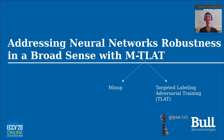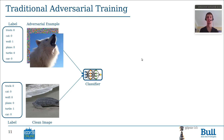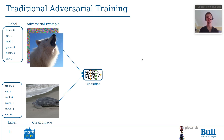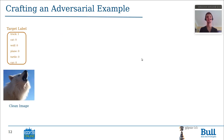The second component is CLATE, Targeted Labeling Adversarial Training. It is an adversarial training which consists in training a classifier on both clean images and adversarial examples. This is a traditional adversarial training. To get an adversarial example, we usually proceed this way. Let us consider a clean image and a target label.